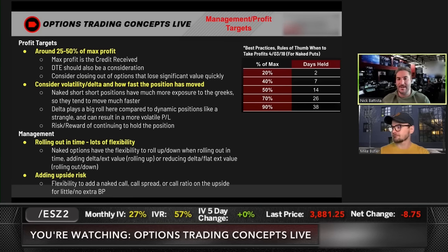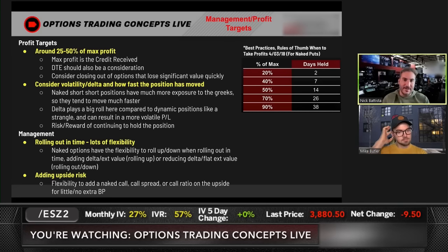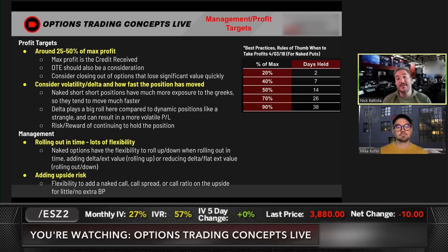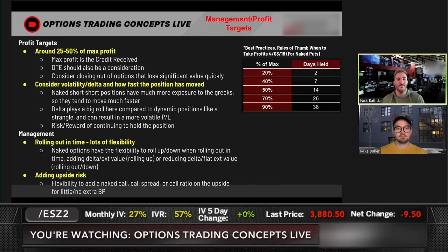Consider volatility and delta — these factor into early management metrics. You've probably gotten one of the two working in your favor if you're considering closing this early: either a directional move in your favor or some volatility contraction. With naked puts, if the stock goes up, you're going to get significantly less long that position and that goes in your favor. The table to the right suggests that at a certain point you have more risk than potential reward over the duration of the trade.